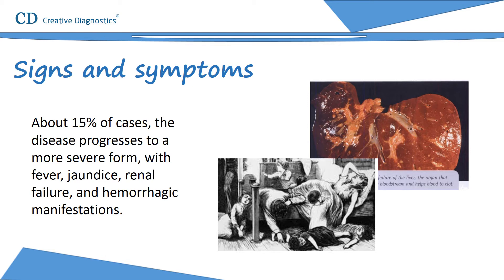Liver failure occurs when the liver is no longer functioning properly. Proper liver function is necessary for survival, as the liver is responsible for maintaining and purifying the blood. Death occurs on days 7 to 10 of illness. Encephalitis is rare. The infection may be so mild as to go unrecognized. Regardless of severity, patients either die or recover completely — there is no chronic outcome.